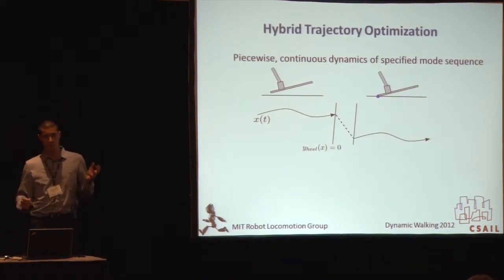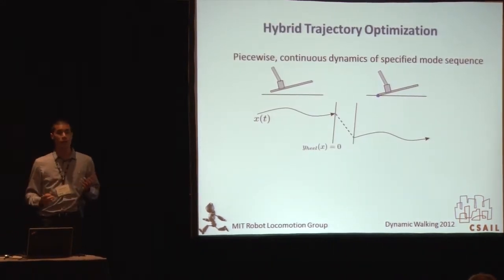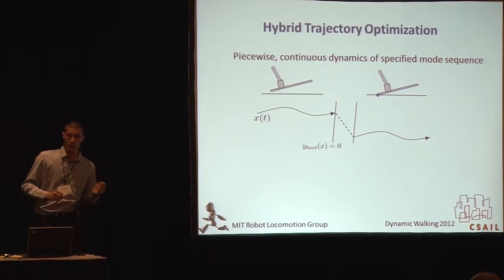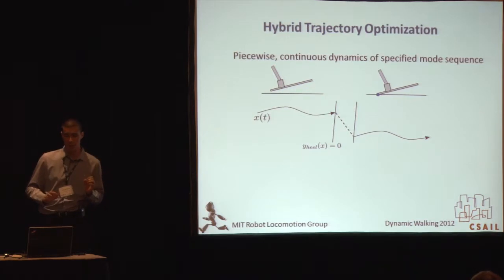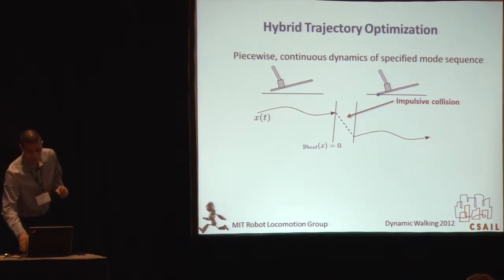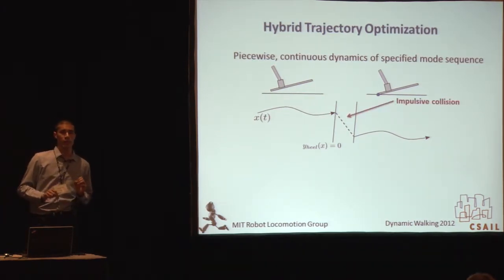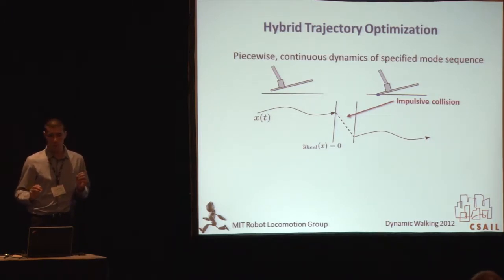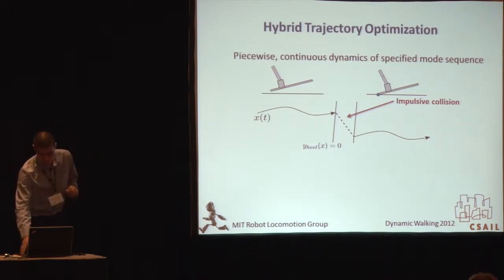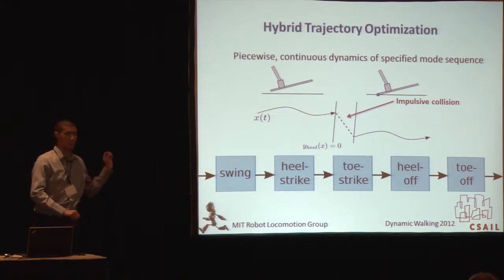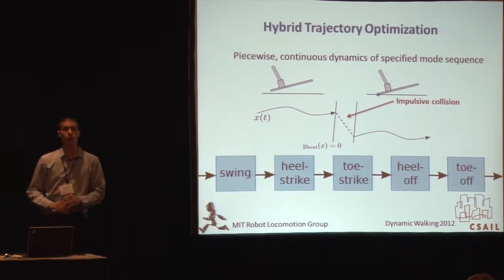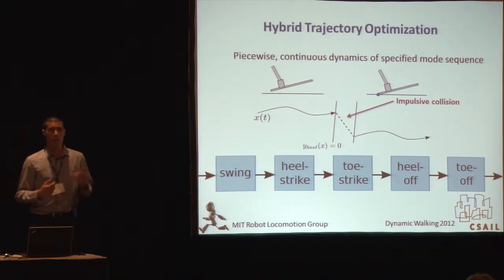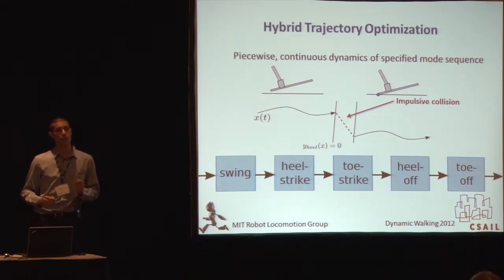What's the more traditional worldview here? We look at a hybrid trajectory optimization problem. Say we had a swing and a stance phase — continuous dynamics of two different phases, with an impulsive collision event occurring in between. We'd optimize these two different modes individually, coming up with a mode sequence. For a simple walking gait, we'd go from swing through toe-off, specifying this a priori.